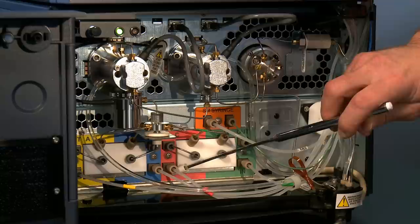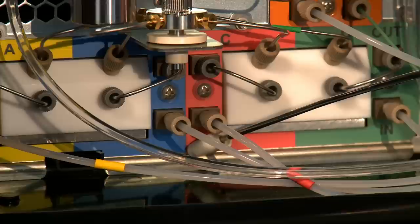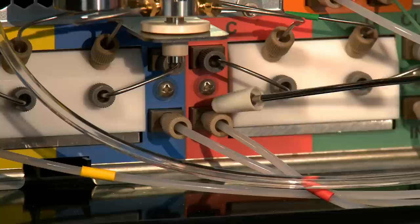Let's follow the C line. It comes first into a vacuum degasser that eliminates any dissolved gases that could interfere with the flow or compromise the proportioning.